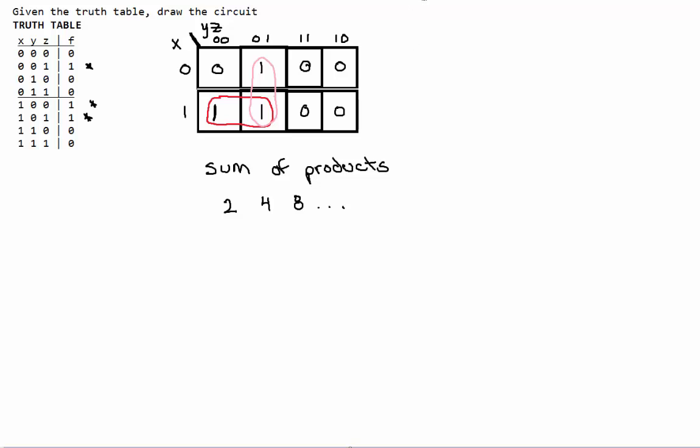Now we're going to write out what numbers are in these squares. For our red group, we're going to have x is 1, and then y and z are 0. So that's 1, 0, 0, and the only other square in the red group is 1, 0, 1. Now we can focus on pink. We have 0, 0, 1, that's our first square here. And then we have 1, 0, 1, which is our second square here.